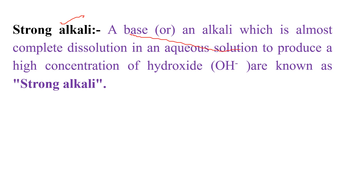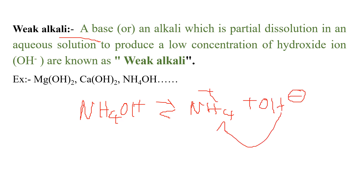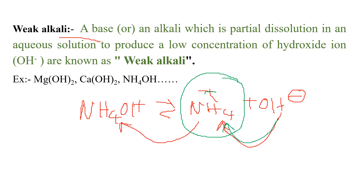A strong alkali is a base or alkali which undergoes almost complete dissolving in aqueous solution to produce a high concentration of hydroxide ions. A weak alkali, for example ammonium hydroxide, is a weak base because it produces OH- ions, but these OH- ions combine again with the ammonium ion to form ammonium hydroxide, since the ammonium ion is less stable.